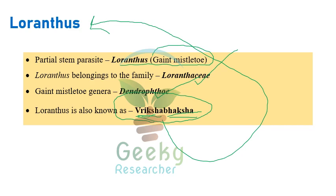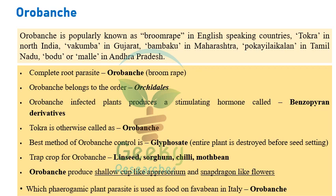Warabanki is popularly known as broom rape in English-speaking countries. Regional names include Tokra in North India, Vakumba in Gujarat, Mambaku in Maharashtra, Pokalagam in Tamil Nadu, and Buddhu Ara Malay in Andhra Pradesh. It is an example of a complete root parasite, belonging to order Archidales.